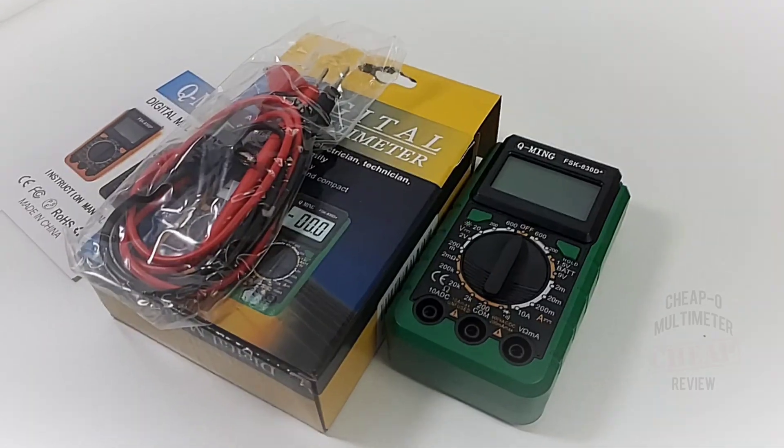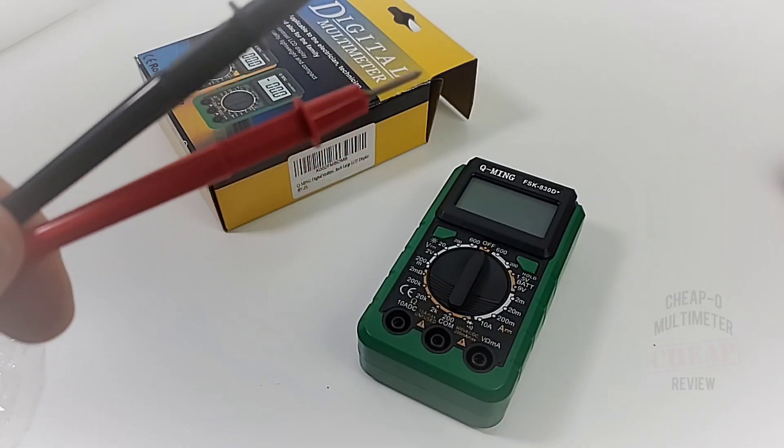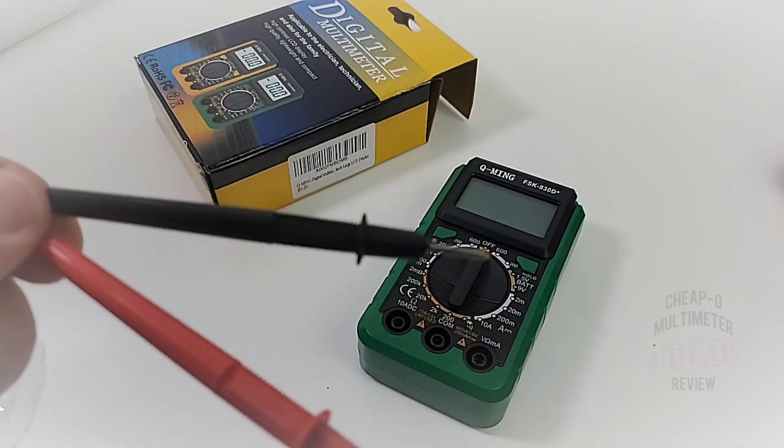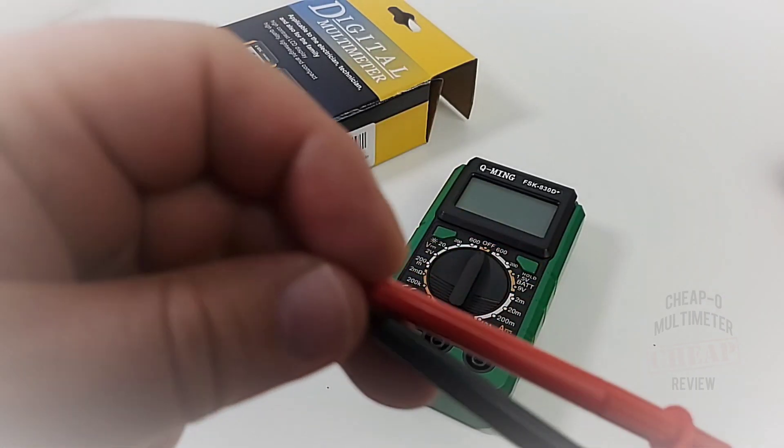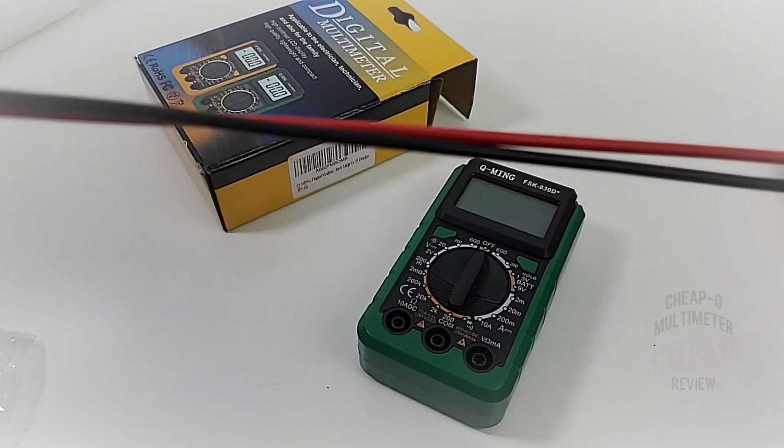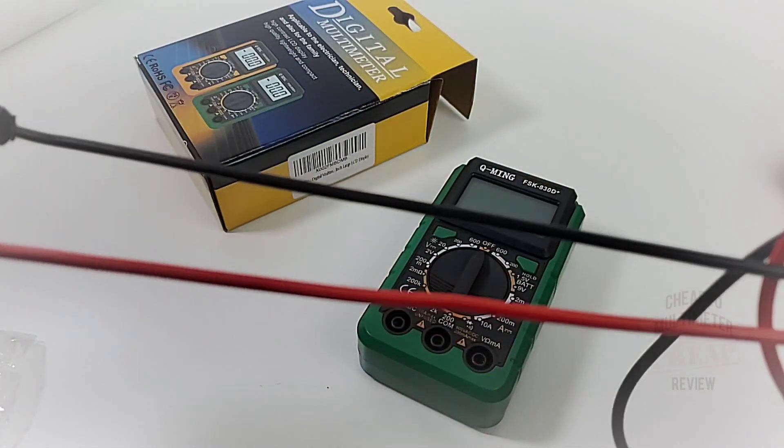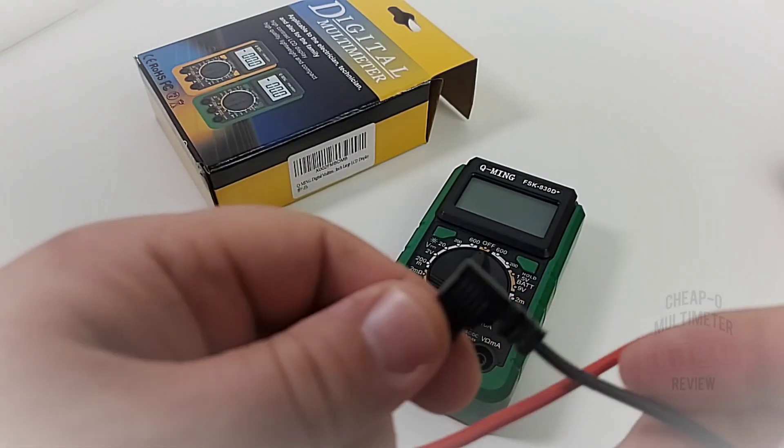Test leads are rated for a thousand volts. They don't actually have a cat rating per se, but a thousand volts, take that with a grain of salt. That being said, they are relatively thick PVC style, definitely not silicon, but I've seen a lot worse in the cheapo round.